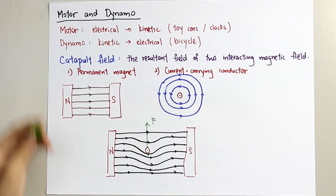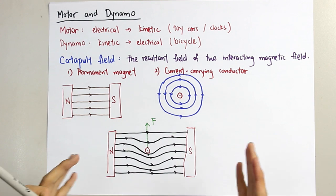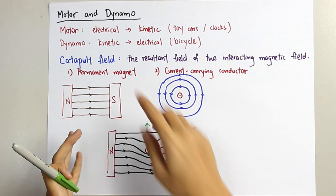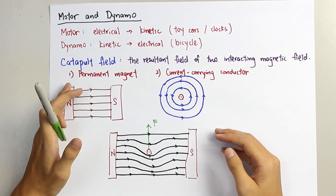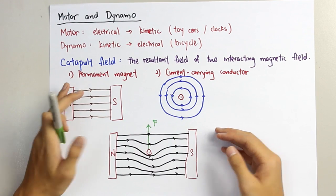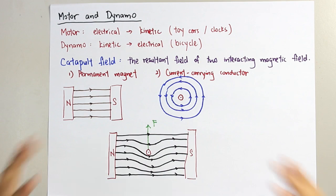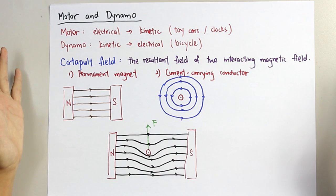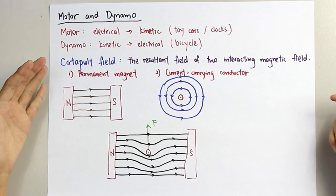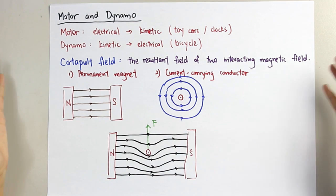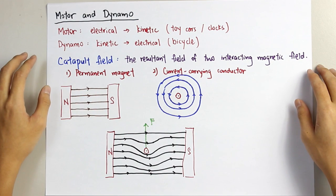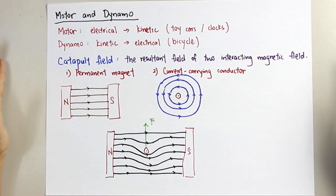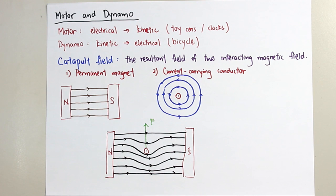This is how you convert electrical energy to kinetic energy. That's it for this part — the introduction of the catapult field — and we will learn more about motor and dynamo in the next video. Thank you for watching, and stay tuned.